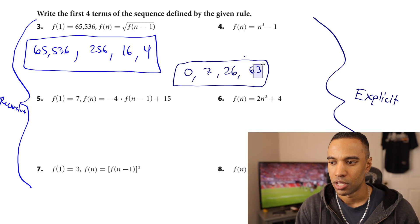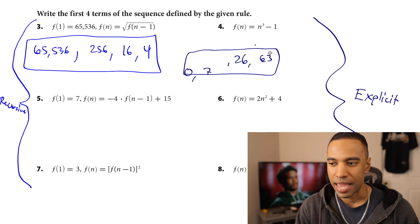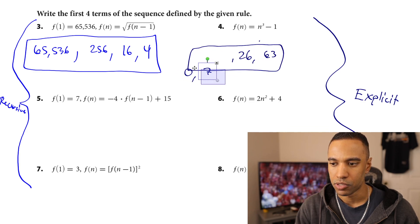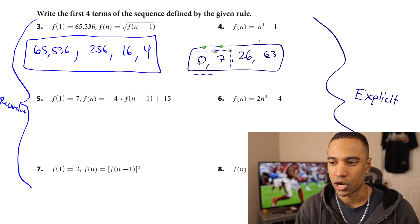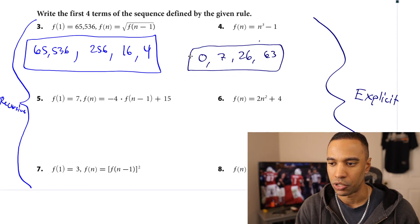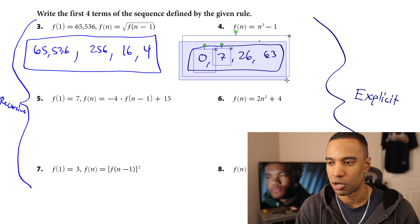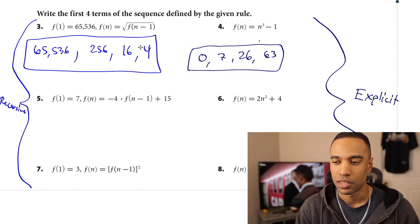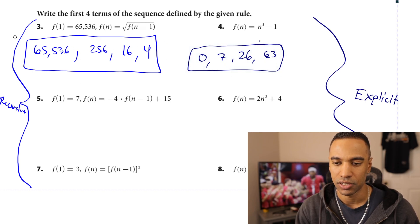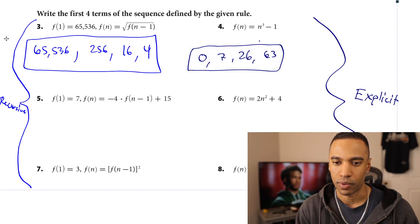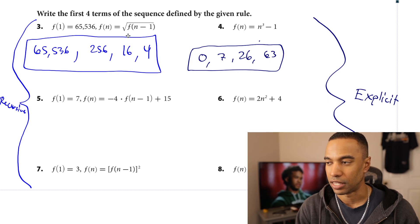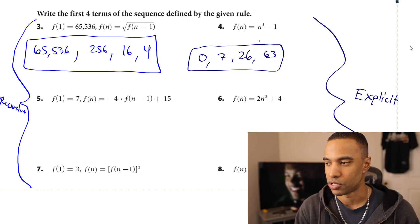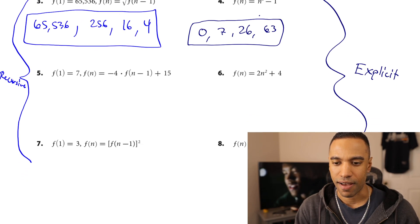With an explicit rule, I use the term position number to calculate my value — not the previous term's value. f of 2 is two cubed minus one: 8 minus 1 equals 7, so the second term is 7. f of 3 is three cubed minus one: 27 minus 1 equals 26. And the fourth term: f of 4 is four cubed minus one, which is 64 minus 1, equals 63. So the first four terms are 0, 7, 26, 63.